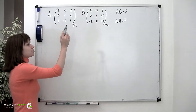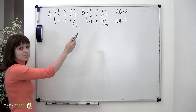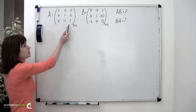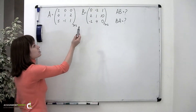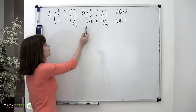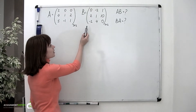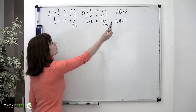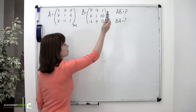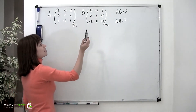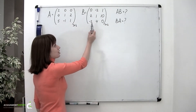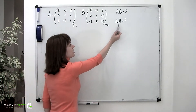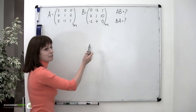We remember that the product of two matrices is defined if the number of columns of the first matrix being multiplied matches the number of rows of the second matrix being multiplied. A has three columns, B has three rows, therefore the AB product can be found. B matrix has three columns and A has three rows, therefore the BA product can be found as well.